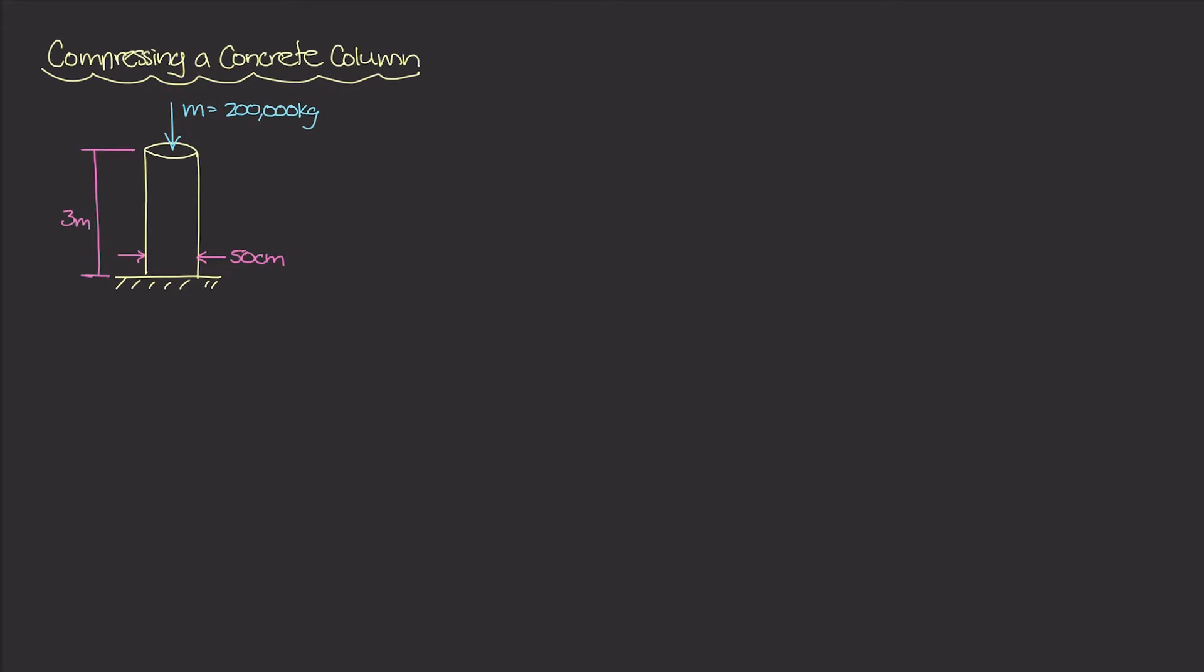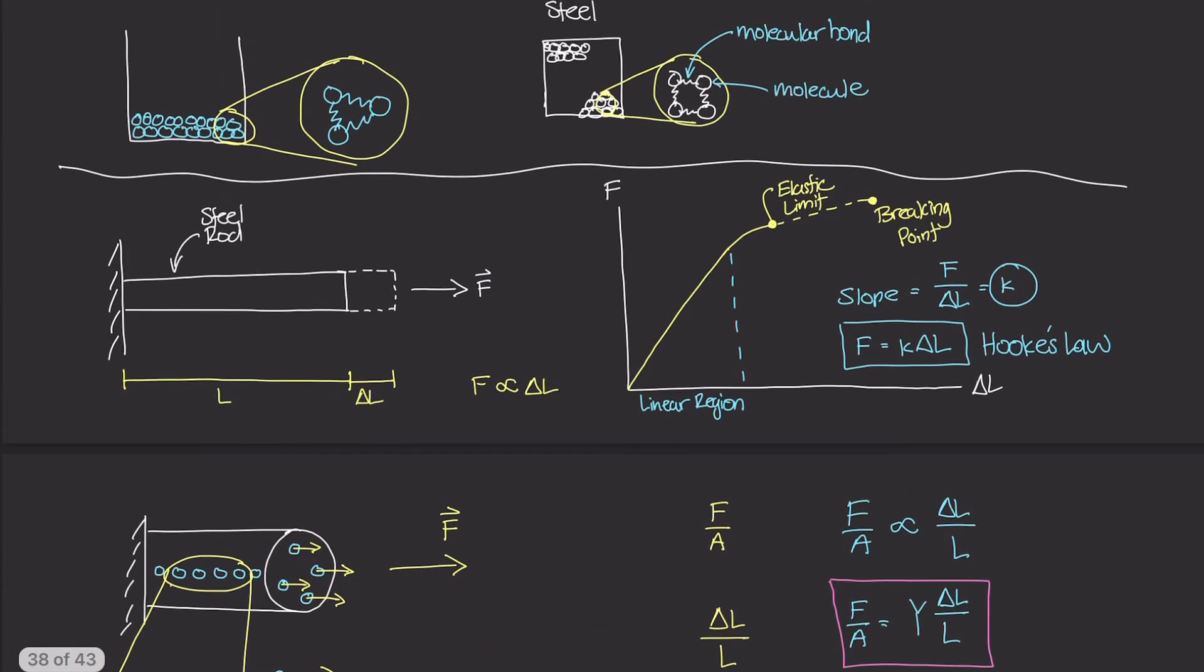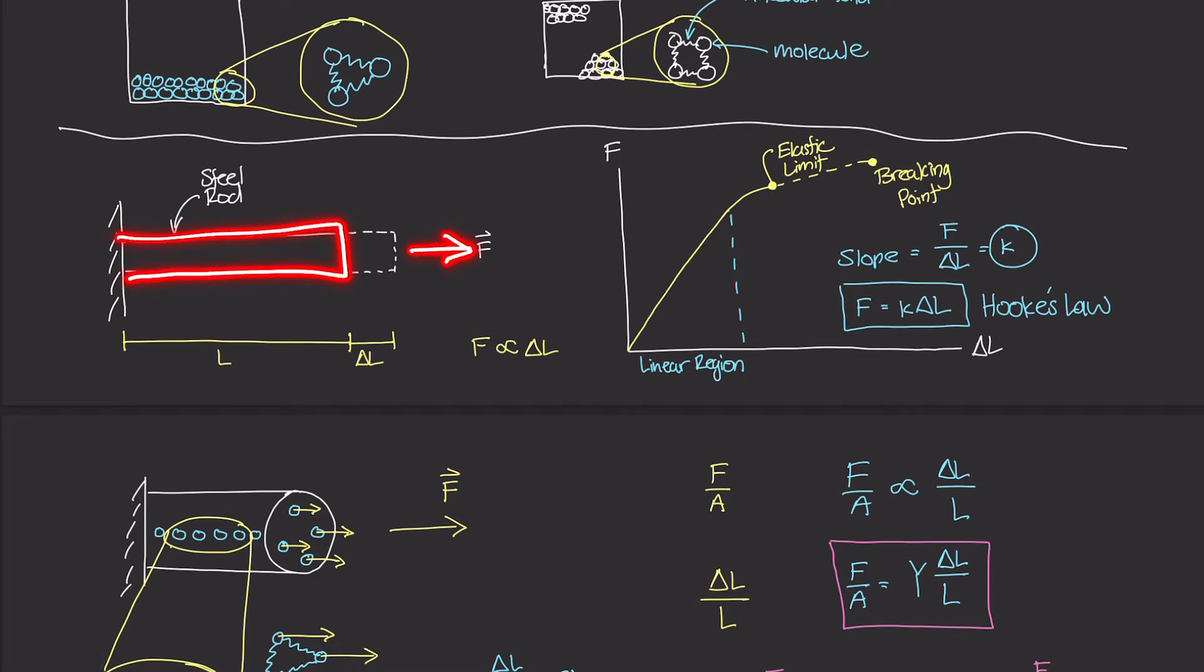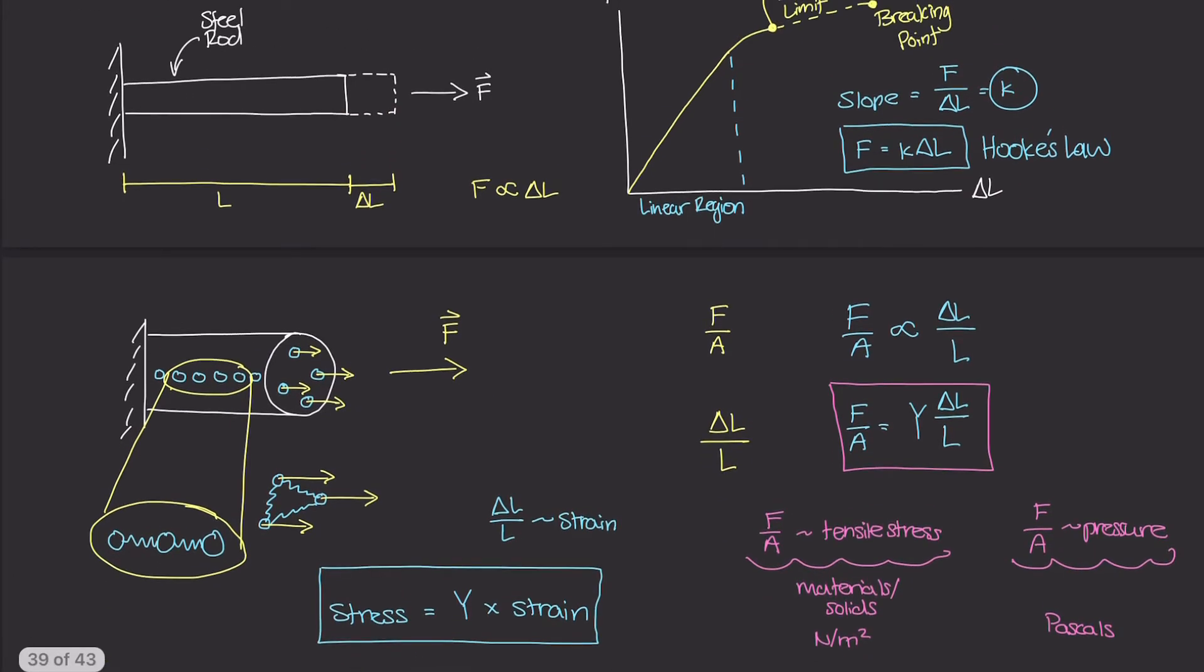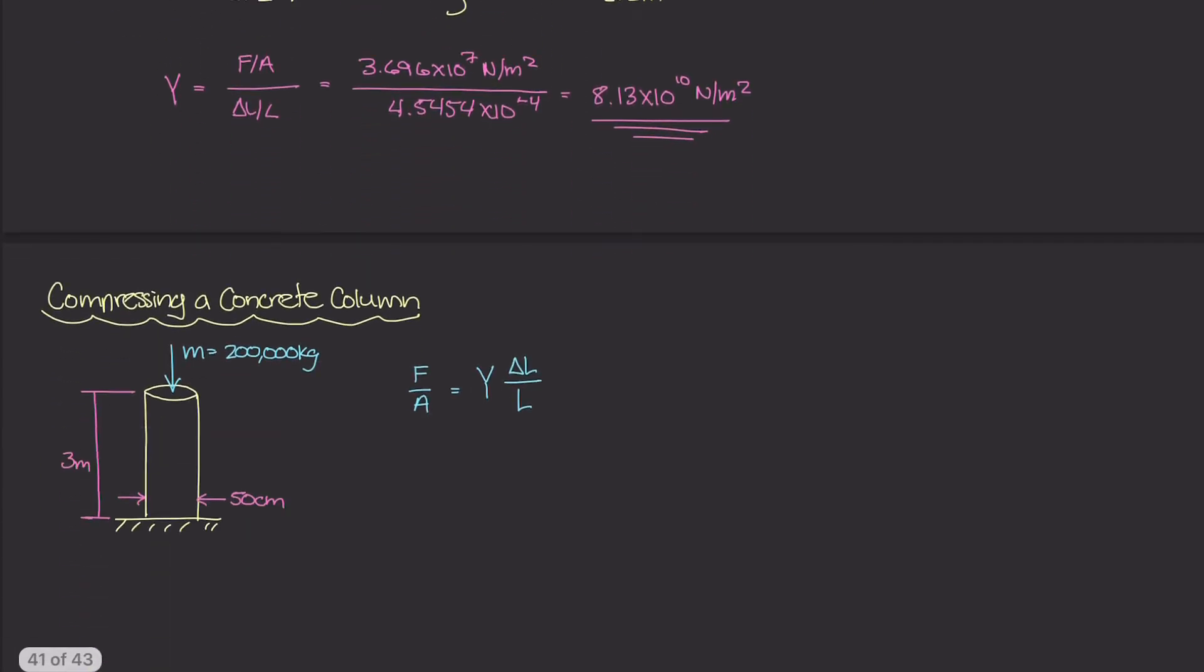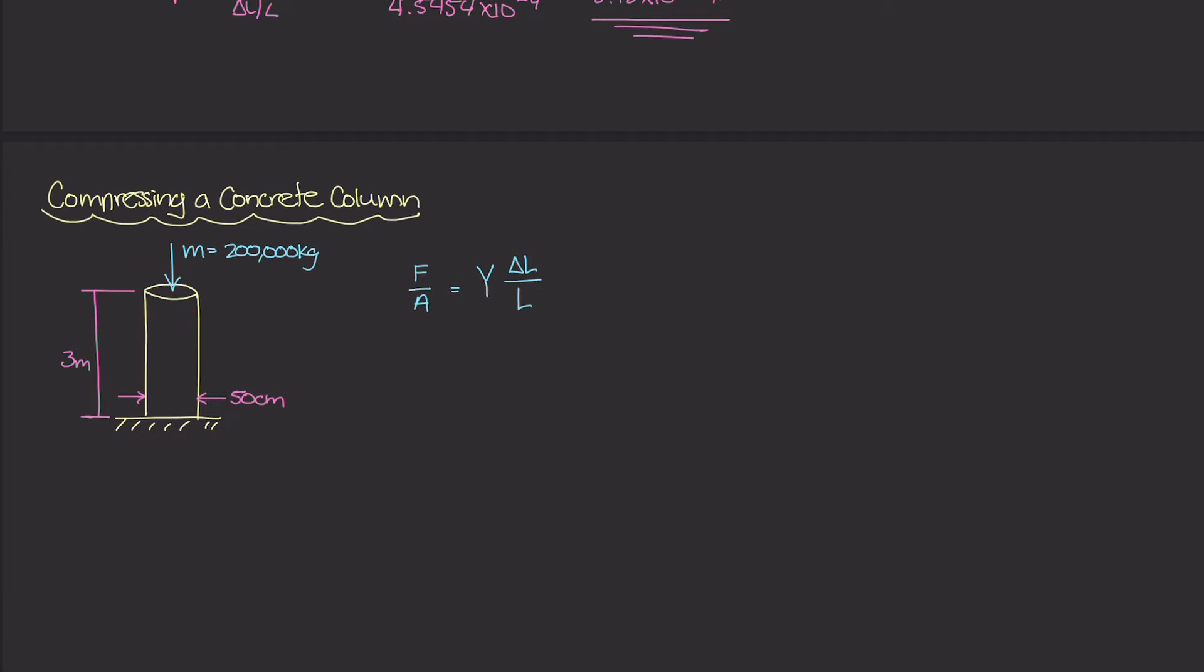So I'm going to write that relationship down here. We have stress, F over A, is equal to your Young's modulus times ΔL over L. Now so far we've been studying this relationship and how it relates to materials that are in tensile stress. In other words, when we have something like this rod and we apply a force, the rod is going to elongate by some amount ΔL. And so all this derivation that we did was with a tensile force being applied. But here in this example, we have a compressive force being applied to the top of the column.